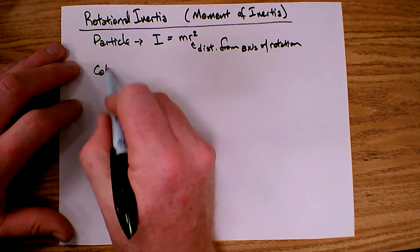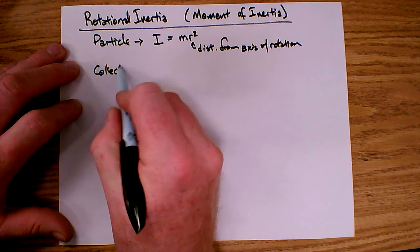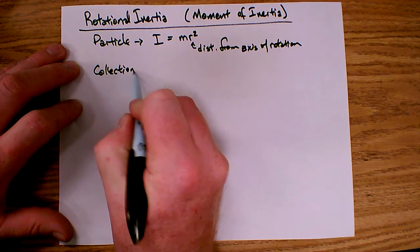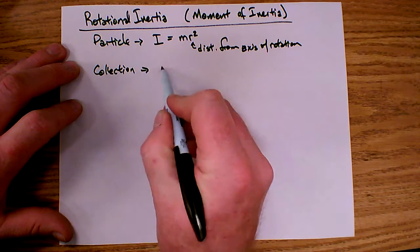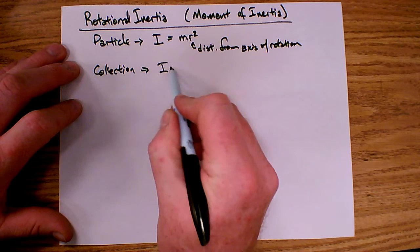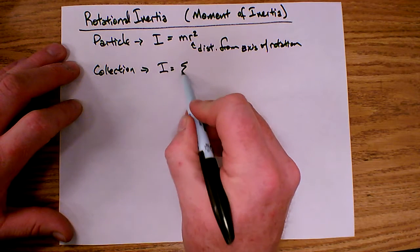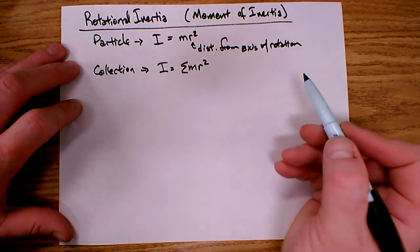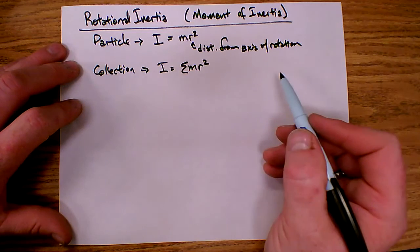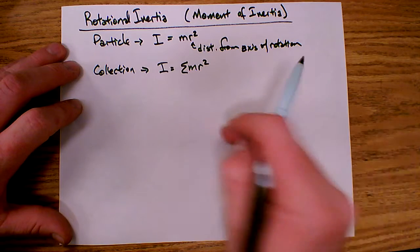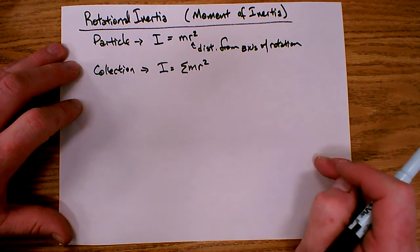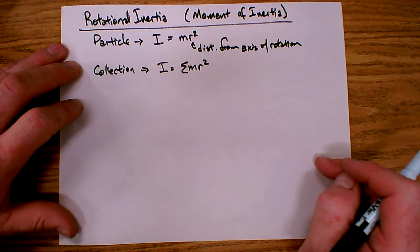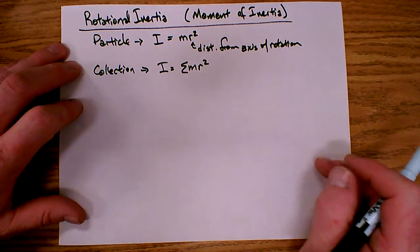If we have a collection of particles, then the inertia is simply the sum of mr squareds. You simply add the mr squared for each piece in the system, and that will give you the total inertia.